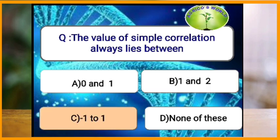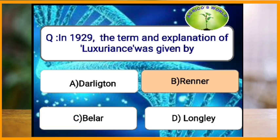The value of simple correlation always lies in between what range? It lies between minus one and plus one. In 1929, the term and explanation of luxuriance was given by which scientist? Luxuriance is the superiority of F1 over both parents for its vegetative growth.